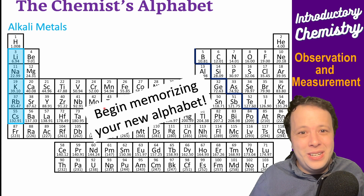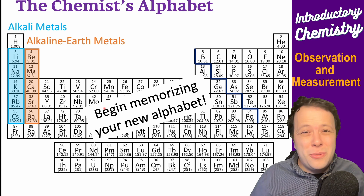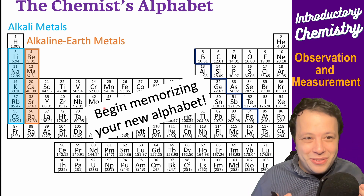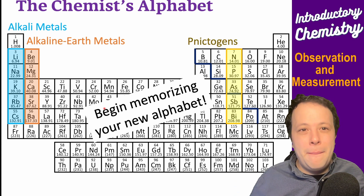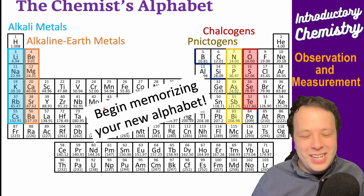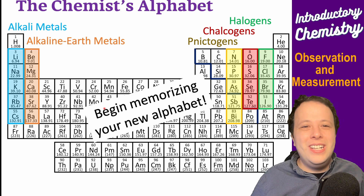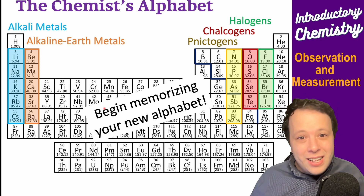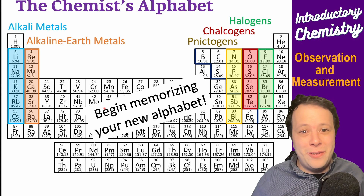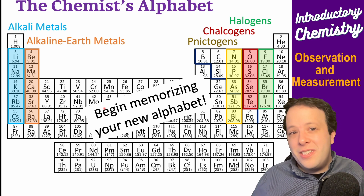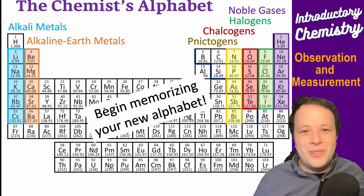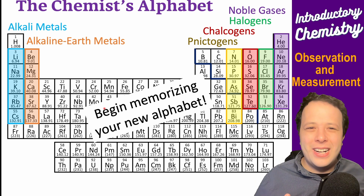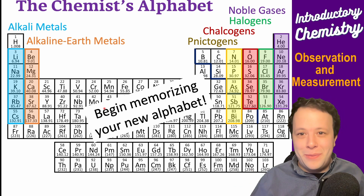Alkaline earth metals are seen in fireworks and produce all the different colors in displays. Every single element has its own unique properties. The pnictogens, chalcogens, and halogens follow — the halogens in particular you should know; they are very reactive gases. The alkali metals on the left are all reactive solids, while the noble gases are the most dignified — they don't interact much. All these groups are organized and have different properties.